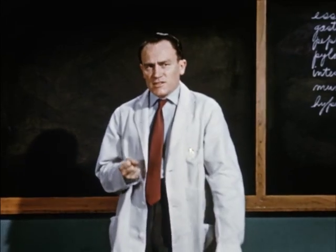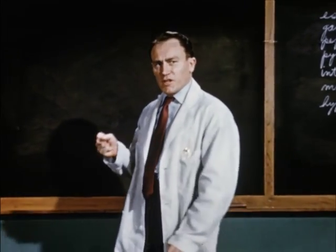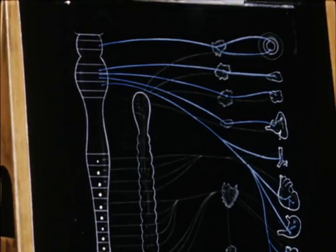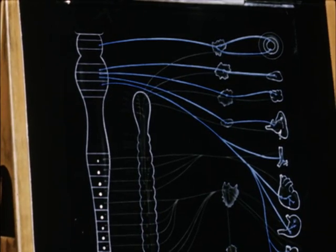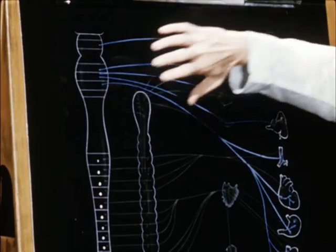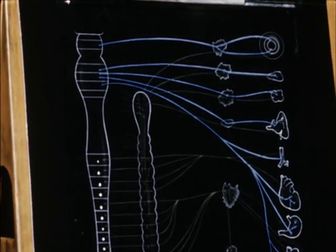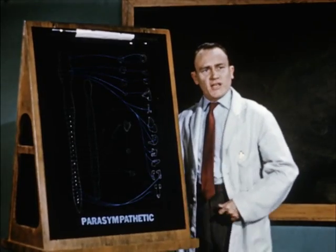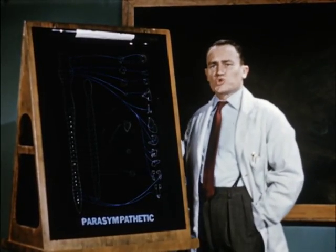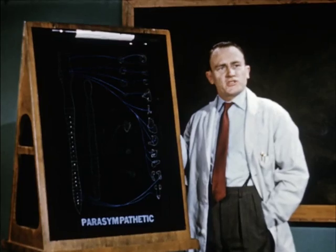It is now thought that in susceptible individuals with tension of this type, there develops an imbalance between the two subdivisions of the autonomic nervous system with a resulting more or less constant barrage of neural stimuli over the parasympathetic division. This parasympathetic imbalance has been called vagotonia, or parasympathotonia.